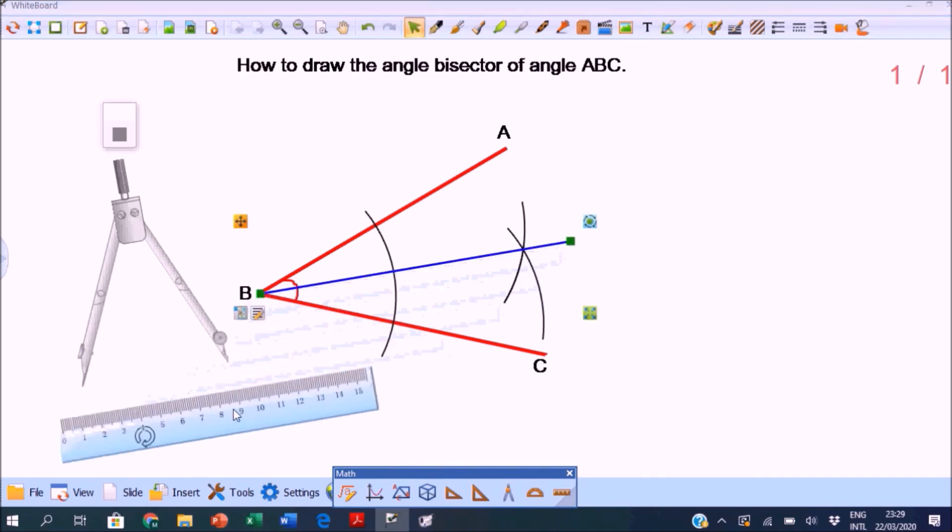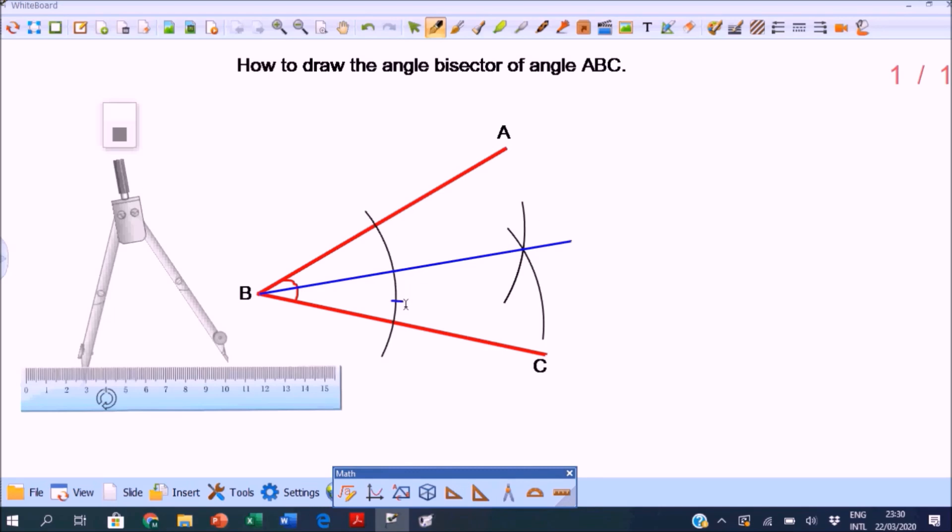Then use your ruler to draw the line joining vertex B to the point where the two arcs cross. This is the angle bisector and these two angles that are formed are equal. So this is how we construct an angle bisector of a given angle.